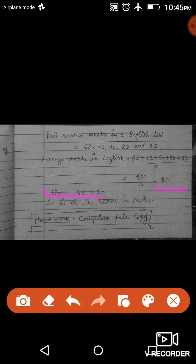Now we have to know that English average marks are 80 and maths average marks are 85. So we are knowing that 85 is greater than 80. So he will do better in maths. This is why we can say that he scored better in maths.